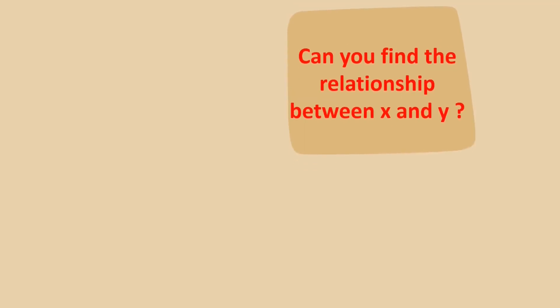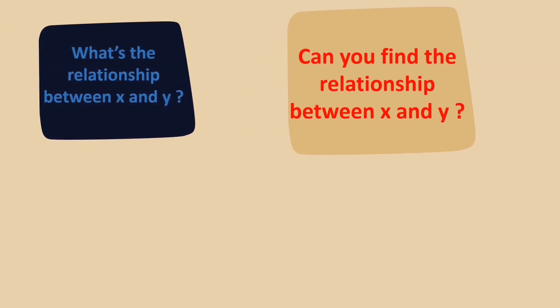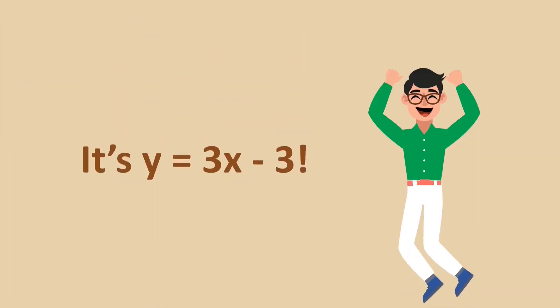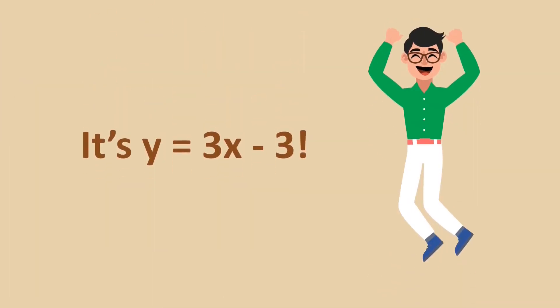Can you find the relationship between x and y? If you can spot it, you have just done machine learning in your head. The answer is y = 3x - 3.